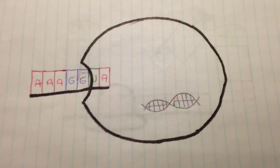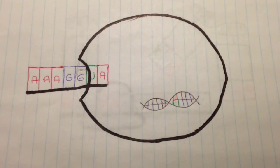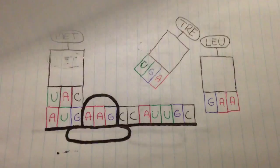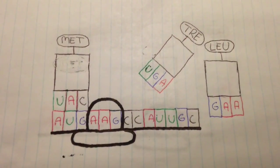The mRNA goes out of the nucleus and attaches to a ribosome in the cytoplasm. The ribosome starts reading the mRNA three bases at a time.